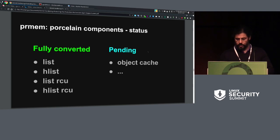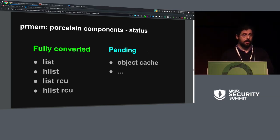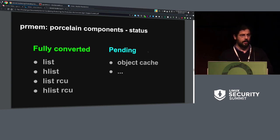What I might be doing next — if my proposal is not completely rejected — is the object cache. Why? Because for example if I want to apply write-rare to the AVC cache in the SELinux policy DB, that one allocates and releases a lot of nodes. So I cannot just heap up memory forever.